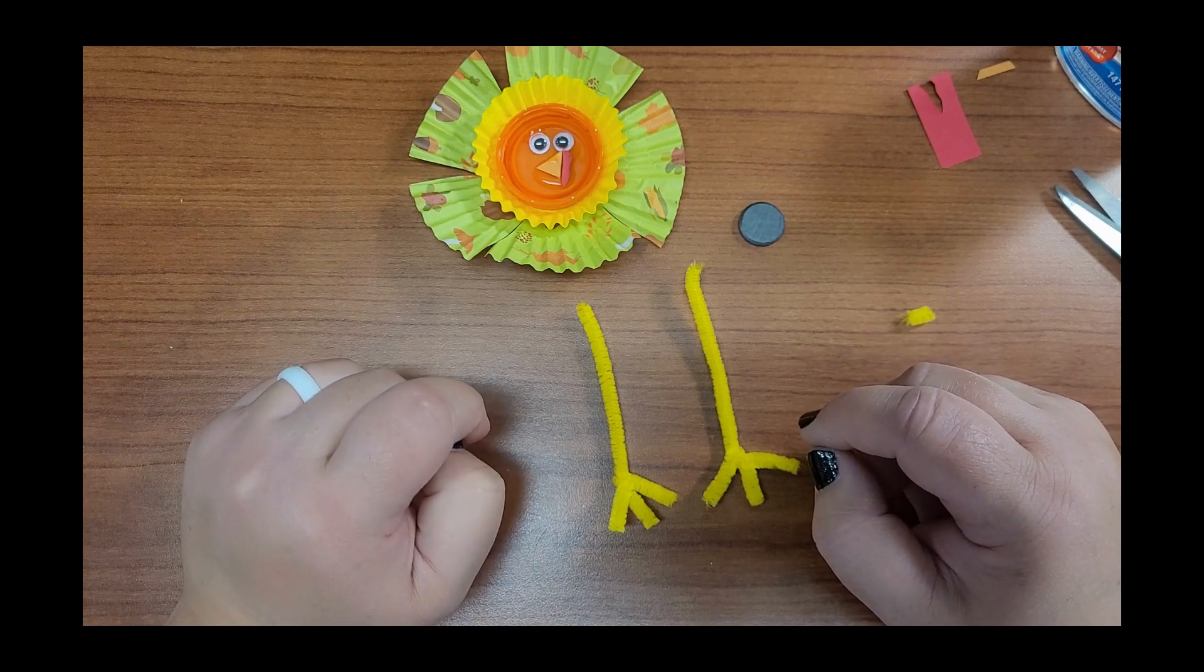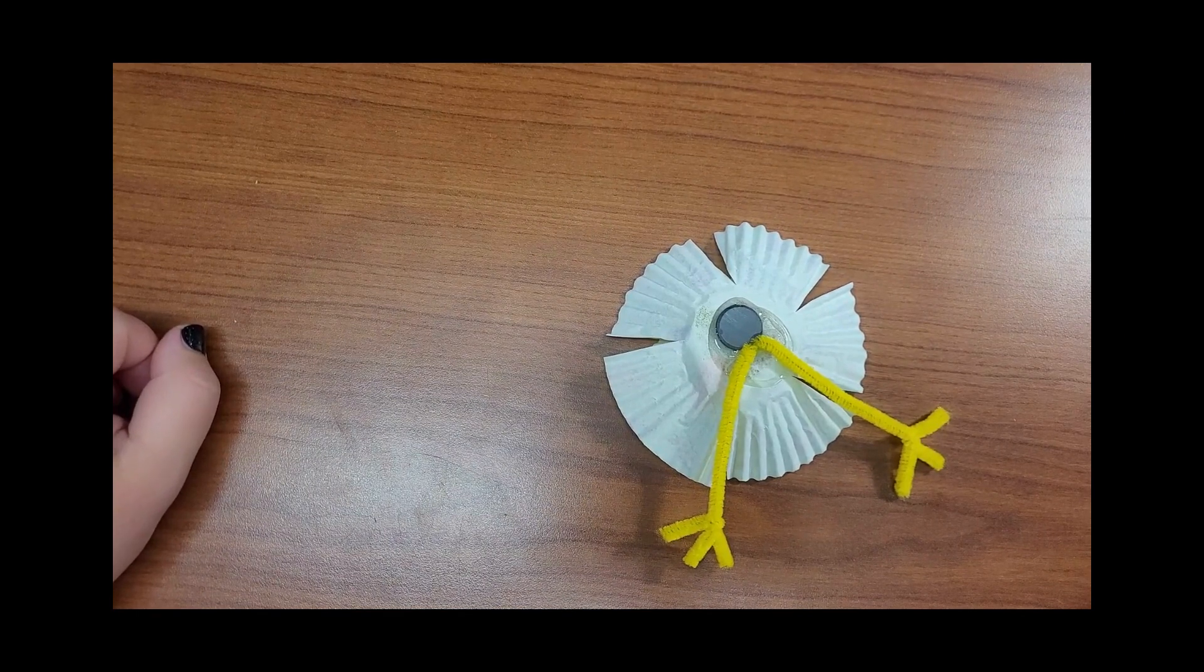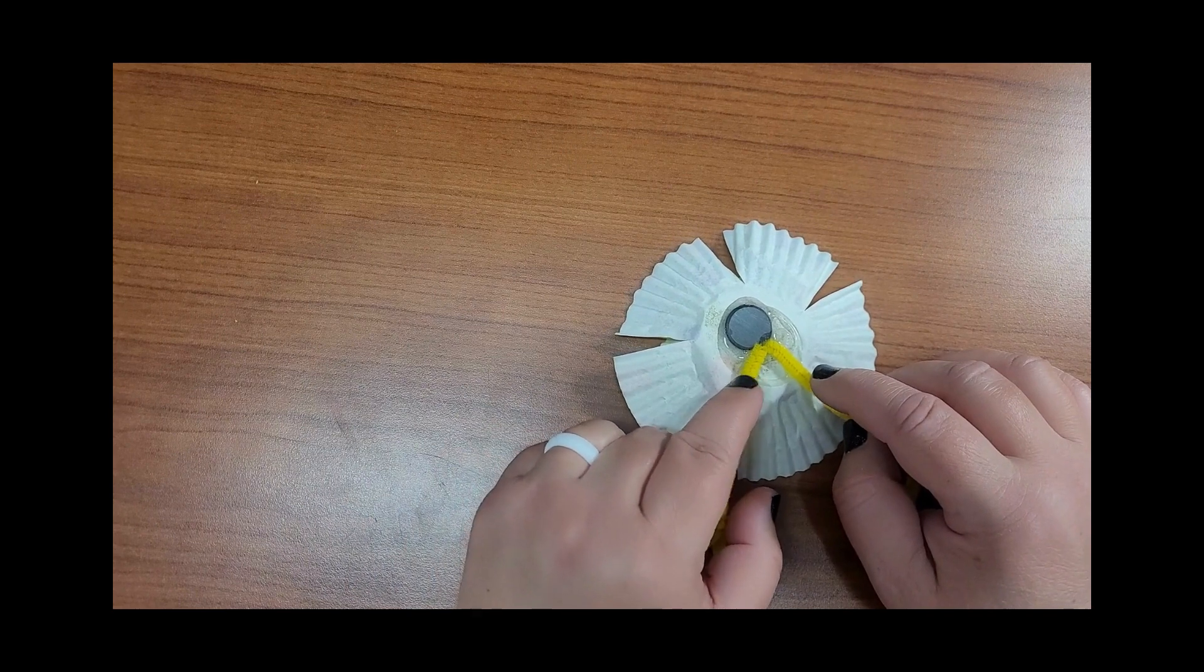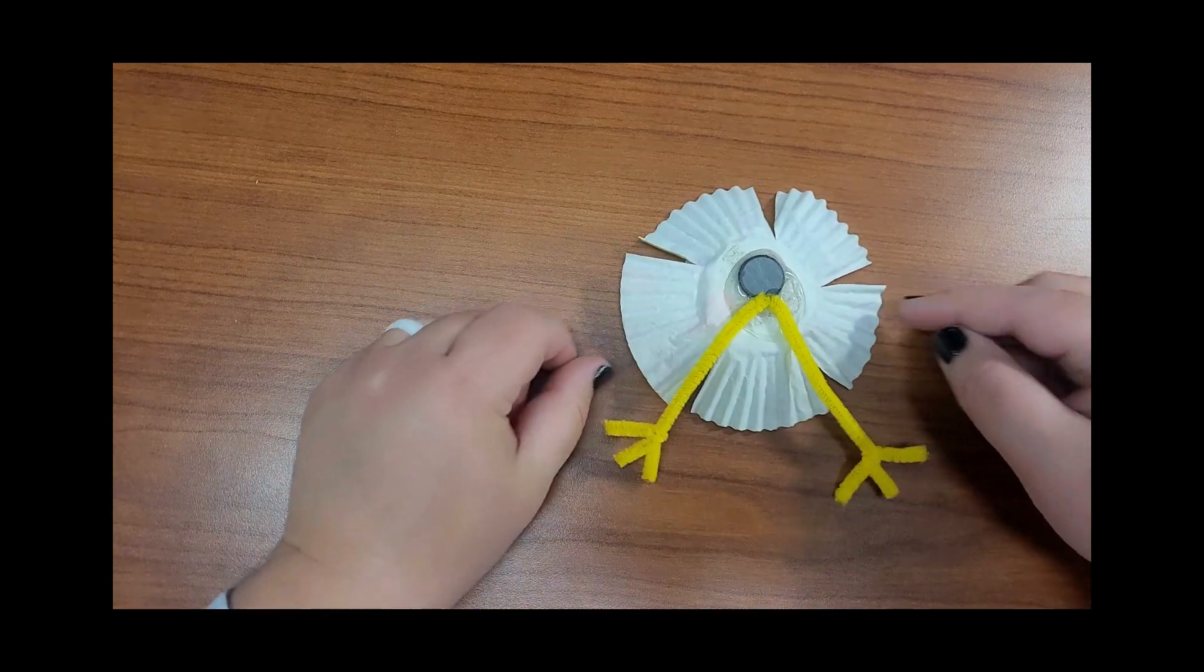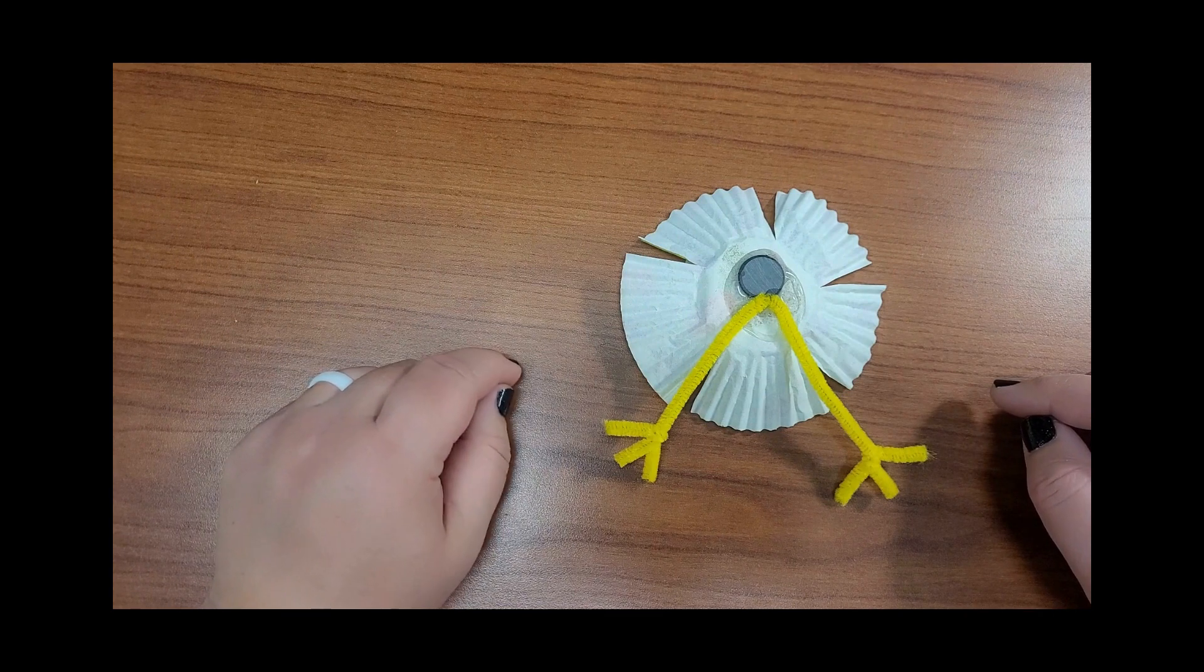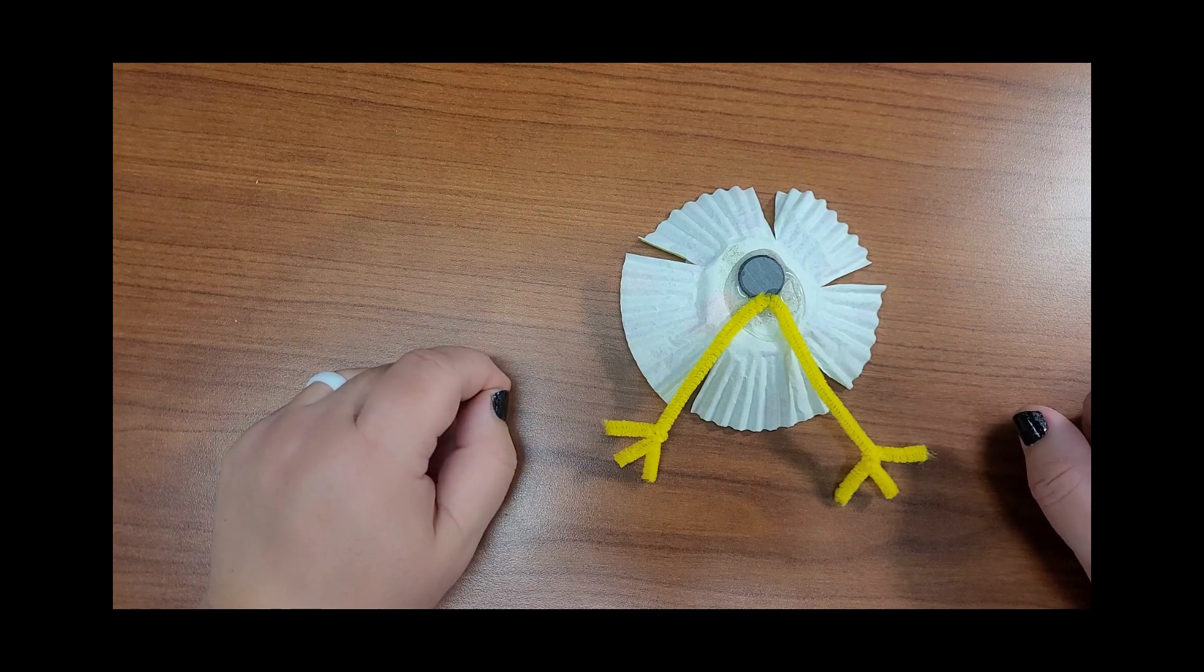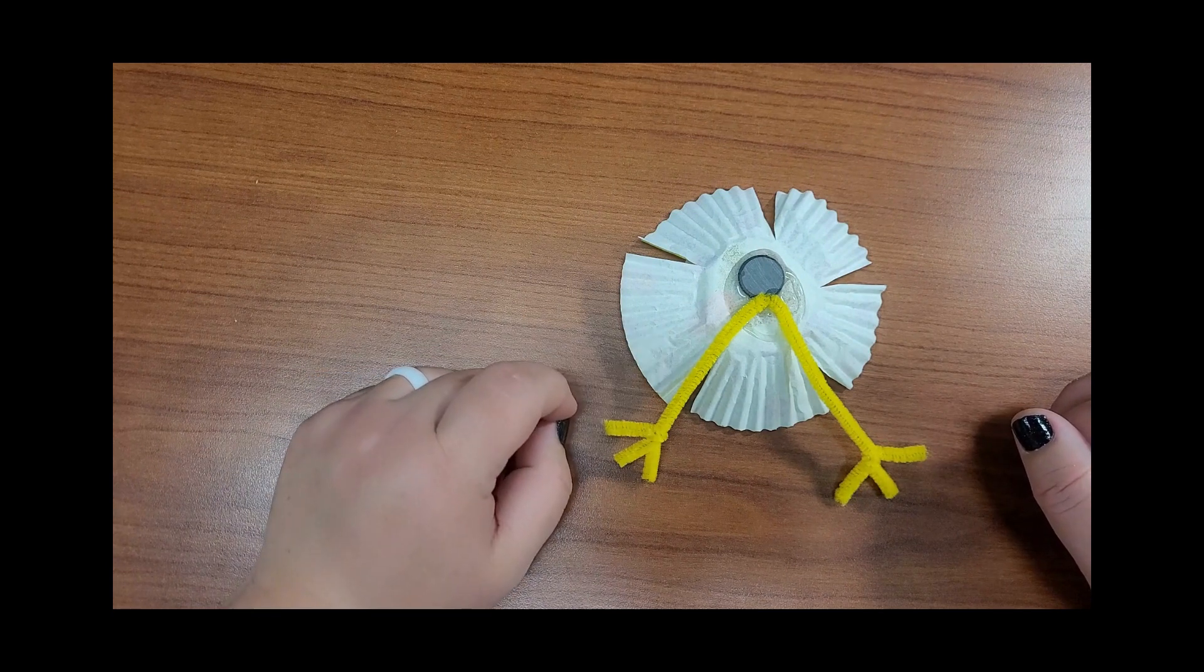All right guys, so the final step after you let everything dry on the front part of your turkey is to add the magnet and those legs we cut out to the back. If you have a hot glue gun that your parent or adult can help you use, then that would work best. If not, Elmer's glue is still going to be good, that's what I used.